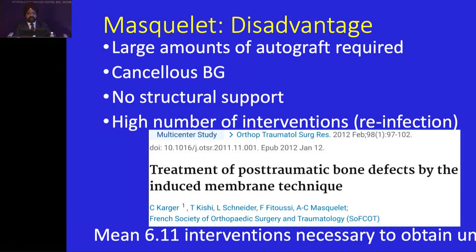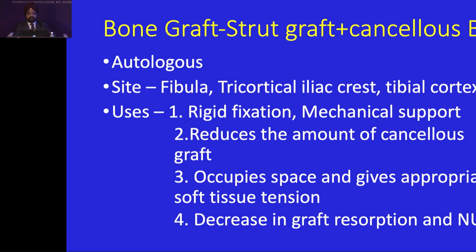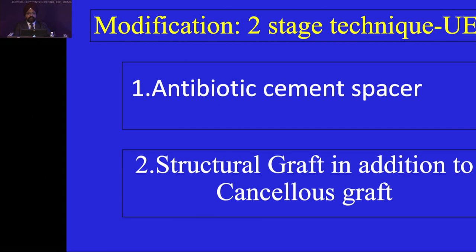If the volume was insufficient, he used reamer irrigator aspirator from the tibia or femur, or added graft expanders and biphasic hydroxyapatite or tricalcium phosphate because they have osteogenic properties. The disadvantage is that since a large amount of graft is required, there is no structural support. Because of infection there are a large number of interventions — a mean of about 6.2. So we used structural graft along with cancellous graft. In our cases, we use fibula, tricortical graft, and fibular cortex. We have rigid fixation, which decreases the amount of cancellous graft, occupies space, gives appropriate tension, and decreases graft resorption.